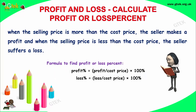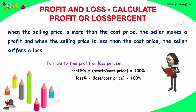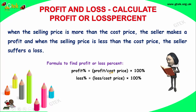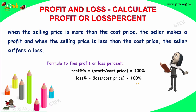What is profit and loss? When the selling price is more than the cost price, the seller makes a profit. When the selling price is lesser than the cost price, the seller suffers a loss. The formula to find profit and loss percentage is: profit percentage equals profit divided by cost price, into 100. Loss percentage equals loss divided by cost price, into 100.